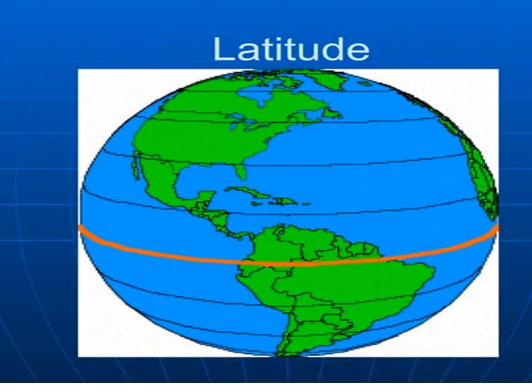The full circles drawn on the surface of a globe run from east to west. These lines are called lines of latitudes. The longest line, which we can see in orange color, is called the equator. It is situated midway between the north pole and the south pole.